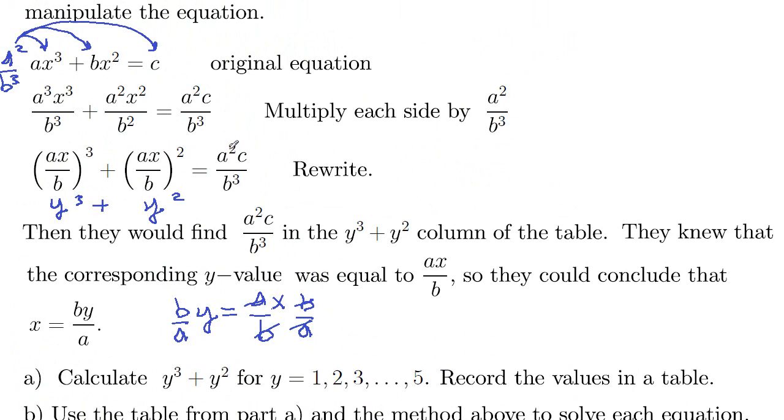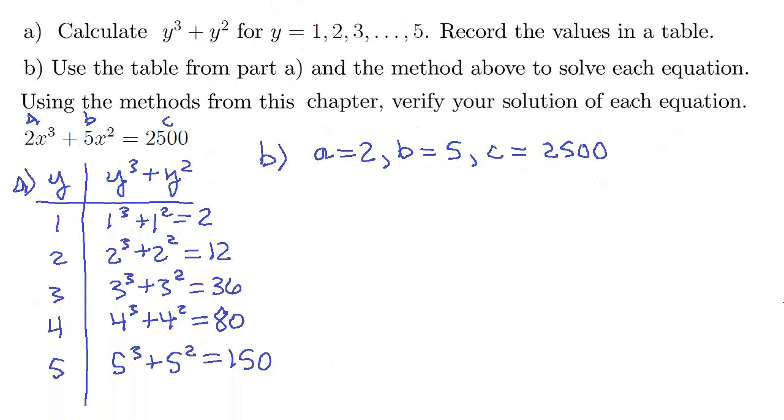So what we do is we look for a squared c over b cubed in the right-hand side of the table. So let's go ahead and compute that quantity. So we compute a squared c over b cubed. So that's going to be two squared times our c is twenty-five hundred, and then divide by b cubed, five cubed. So that's going to be four times twenty-five hundred, and then we are dividing by five cubed is one twenty-five.